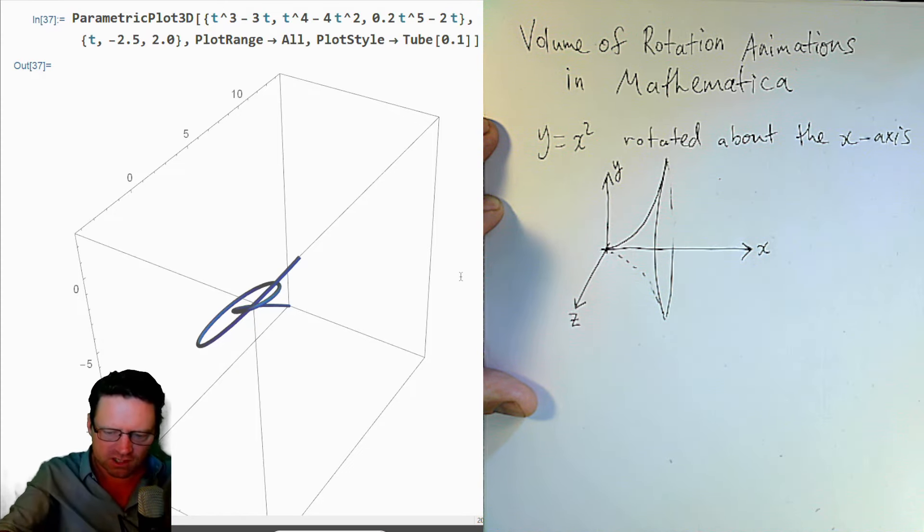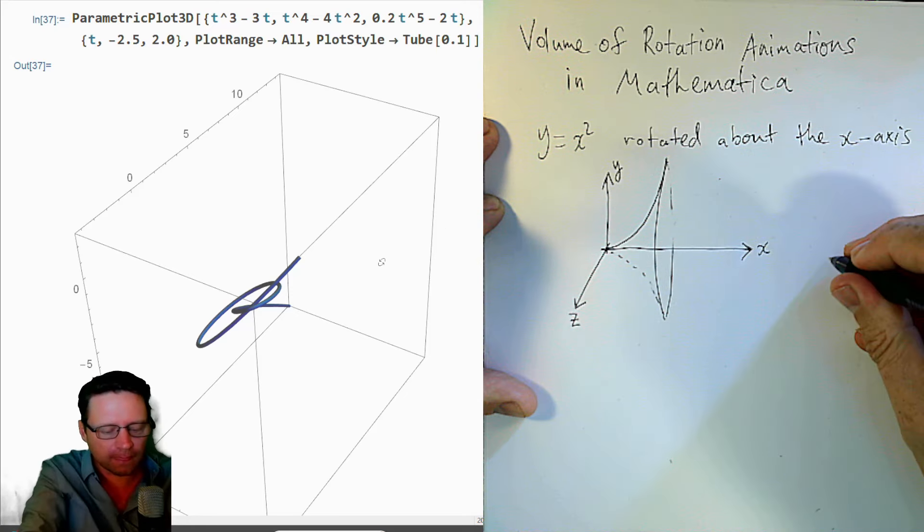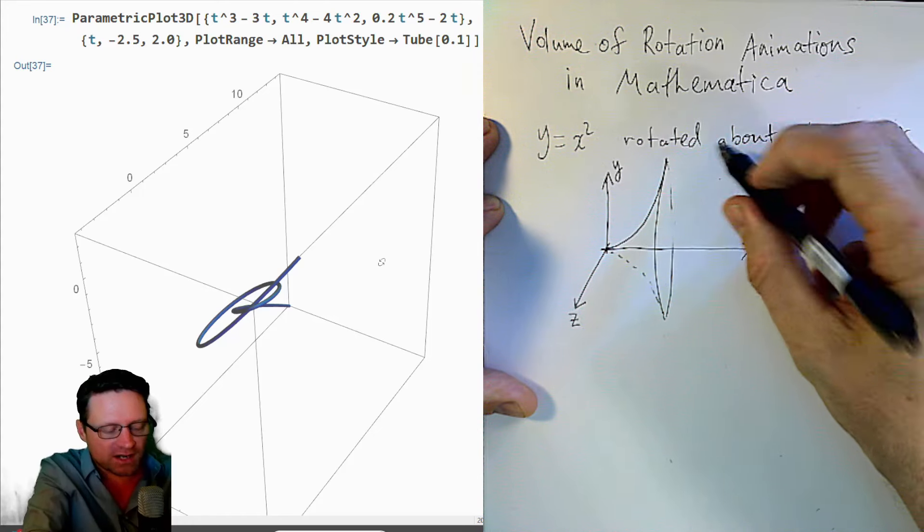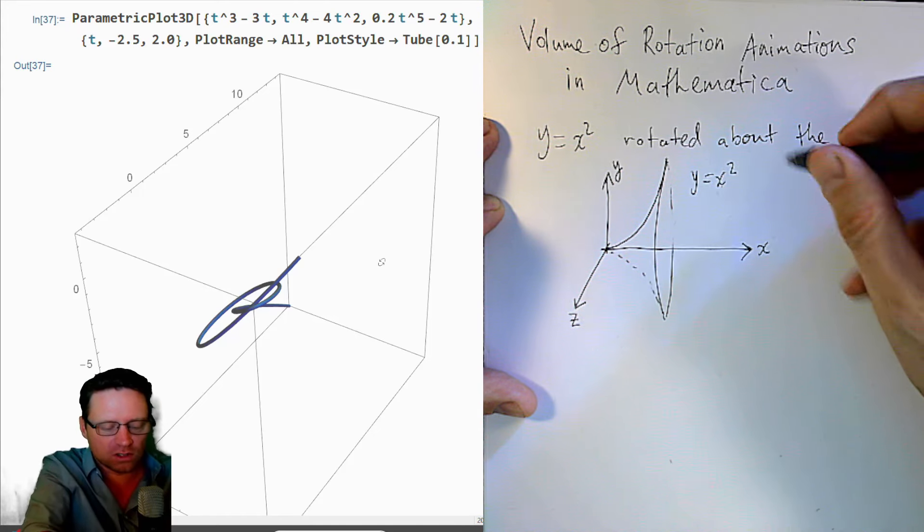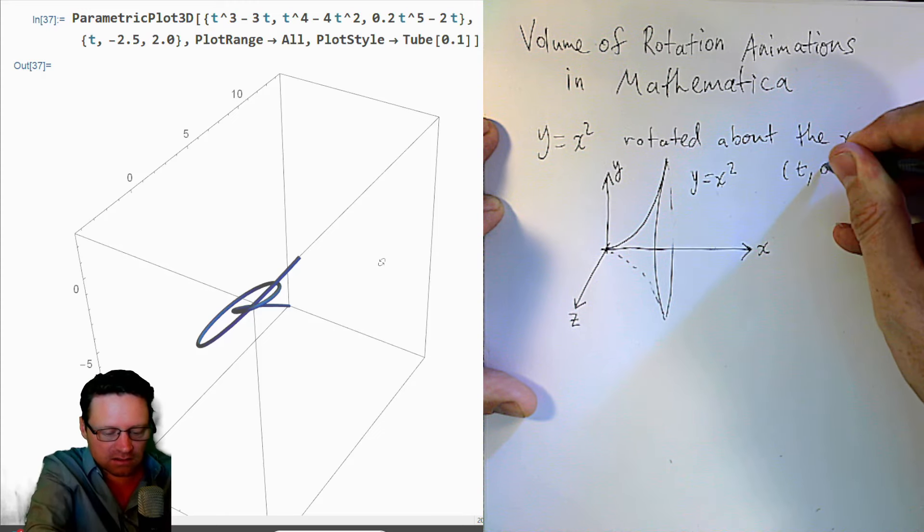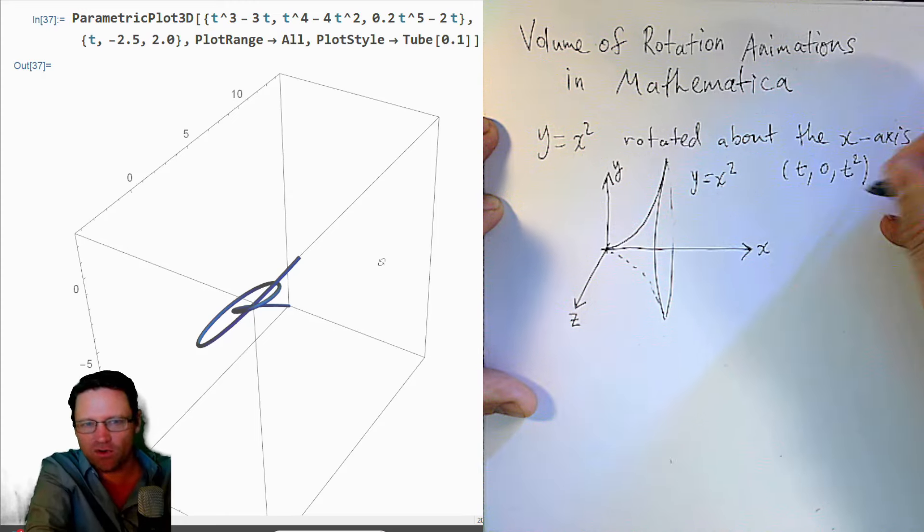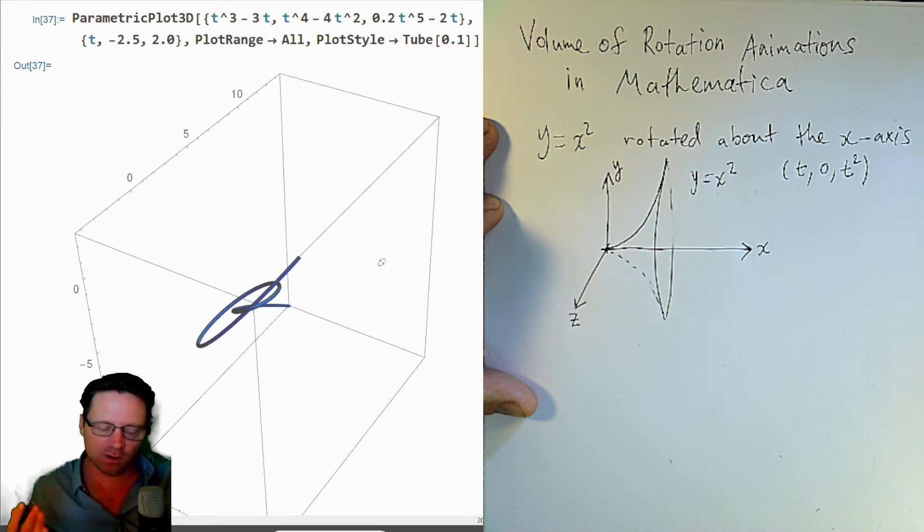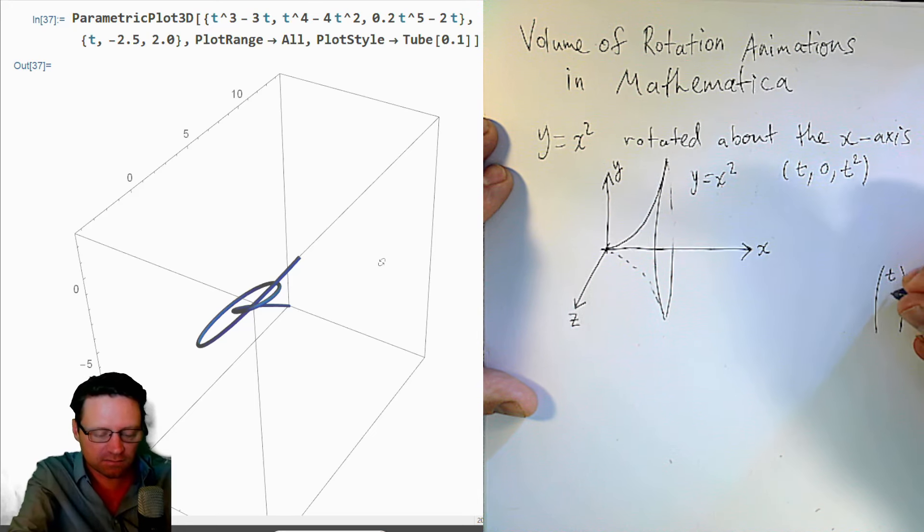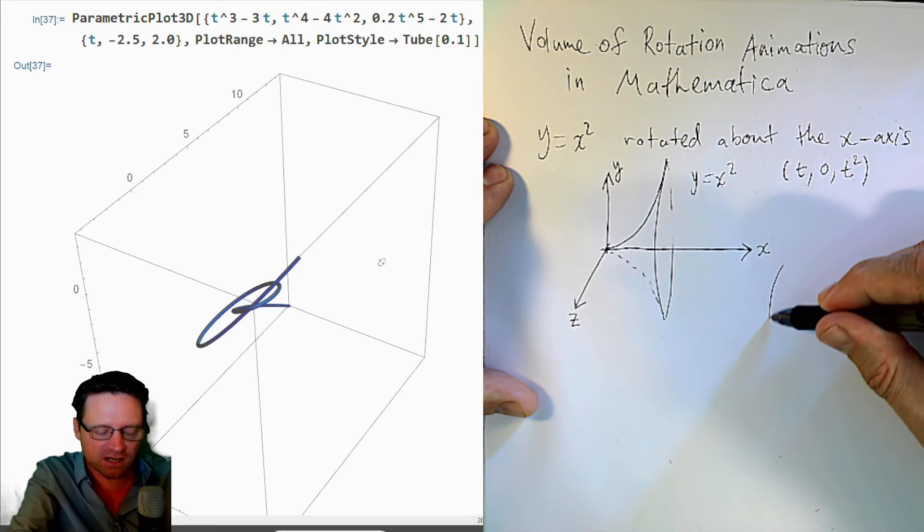So, first we have in parametric form, the equation y equals x squared would look something like t, 0 and t squared, where t is a parameter. And so what I want to do is now view this as a vector and rotate this using a rotation matrix.